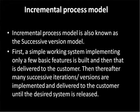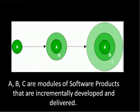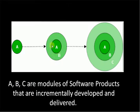We develop in small parts and deliver to the customer. Then, after many successive interactions, more versions are implemented and delivered to the customer. When we have small parts combined, it becomes a big software. First, we will make this module, then we will make the next module.